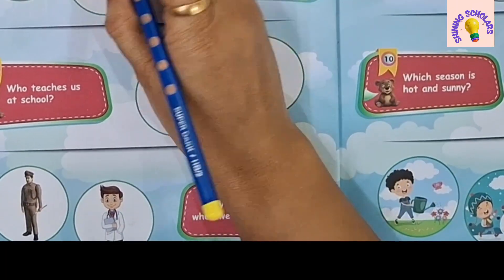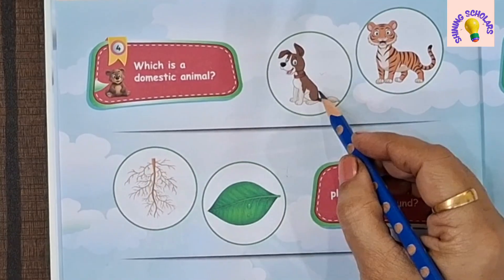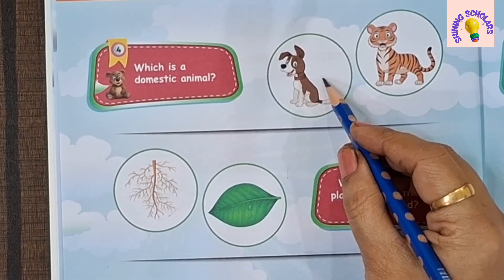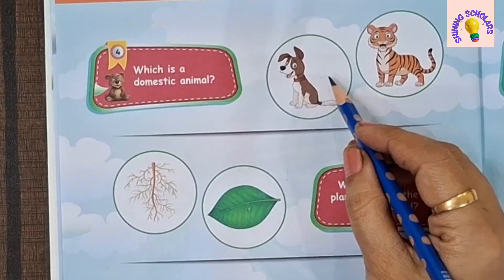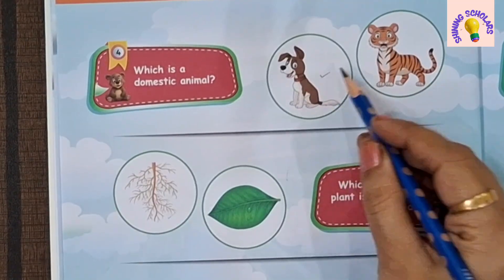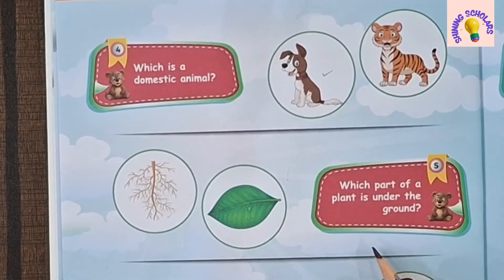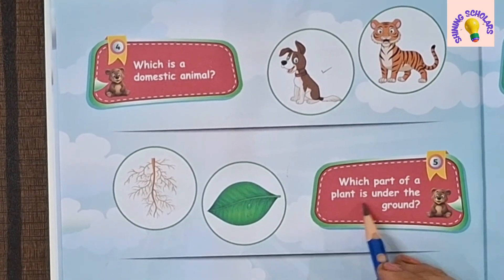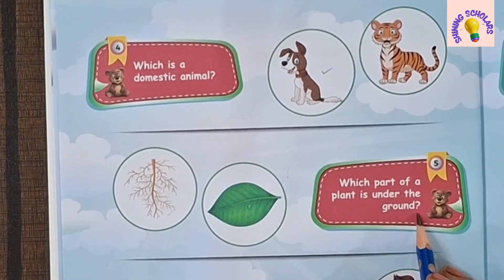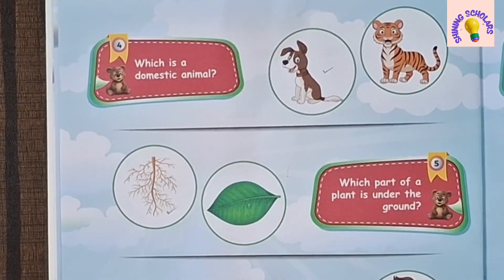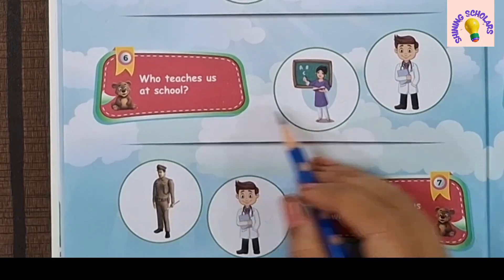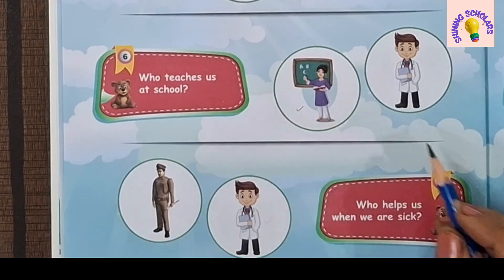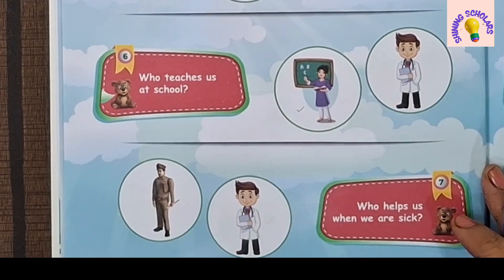Next question: Which is a domestic animal — dog or tiger? Dog is a domestic animal and it's a pet animal. Which part of the plant is under the ground? Roots are under the ground. Who teaches us at school? Teacher teaches us at school.